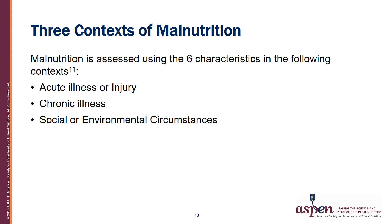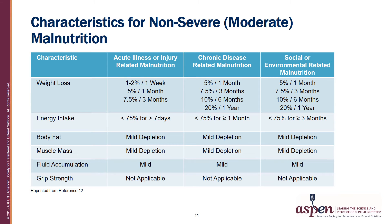Malnutrition is assessed using the six clinical characteristics in the following contexts: acute illness or injury, chronic illness, or social or environmental circumstances. With acute illness or injury-related malnutrition, the weight change evaluation only goes back as far as three months, whereas with chronic disease or social or environmental related malnutrition, the weight change evaluation can go back as far as a year, because malnutrition in these cases takes longer to develop.